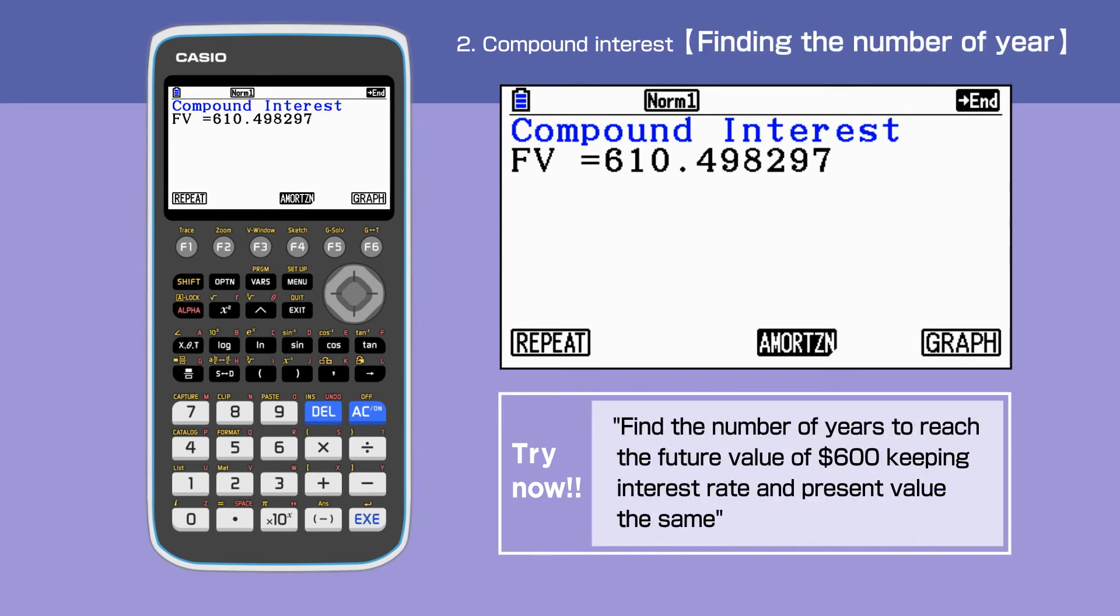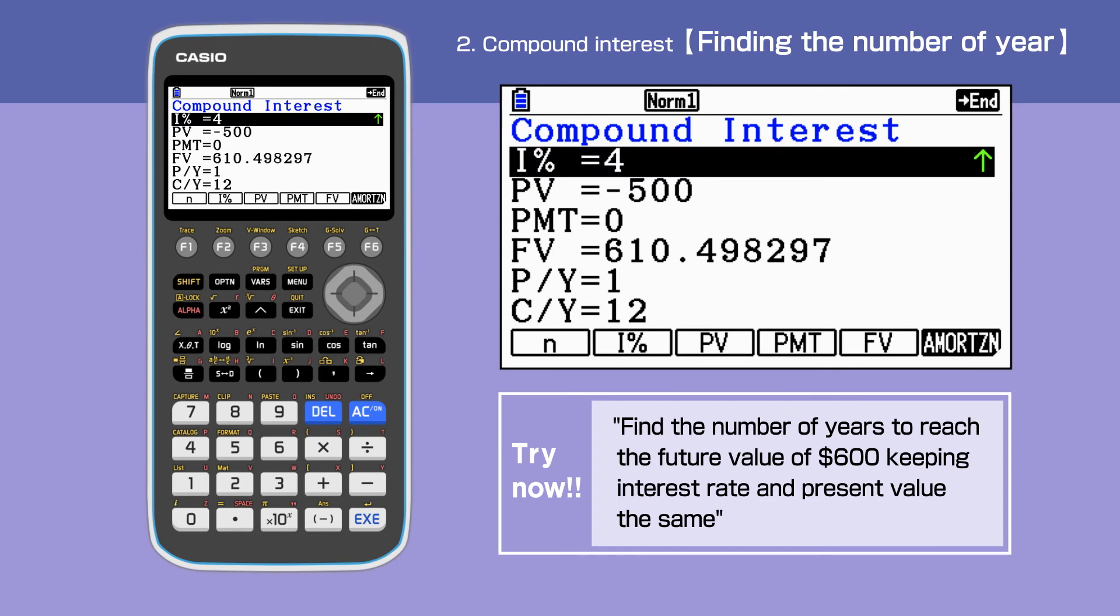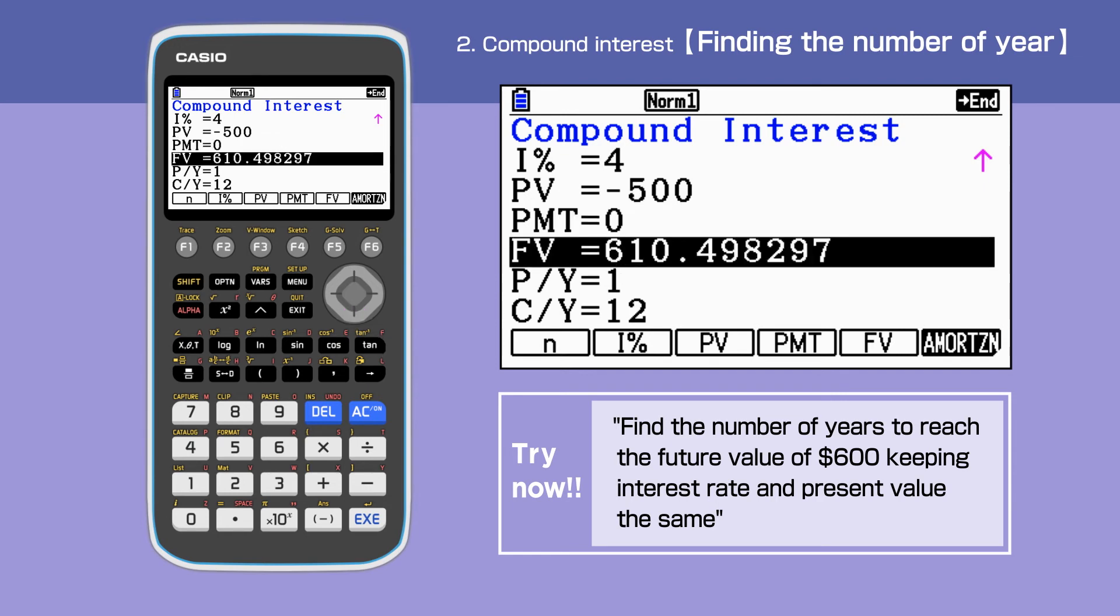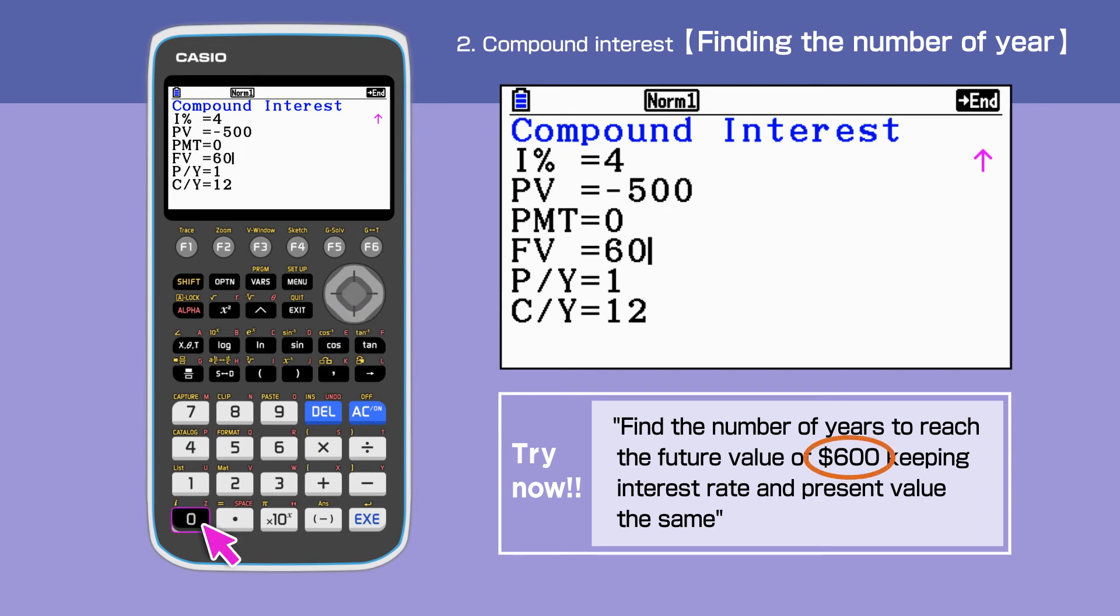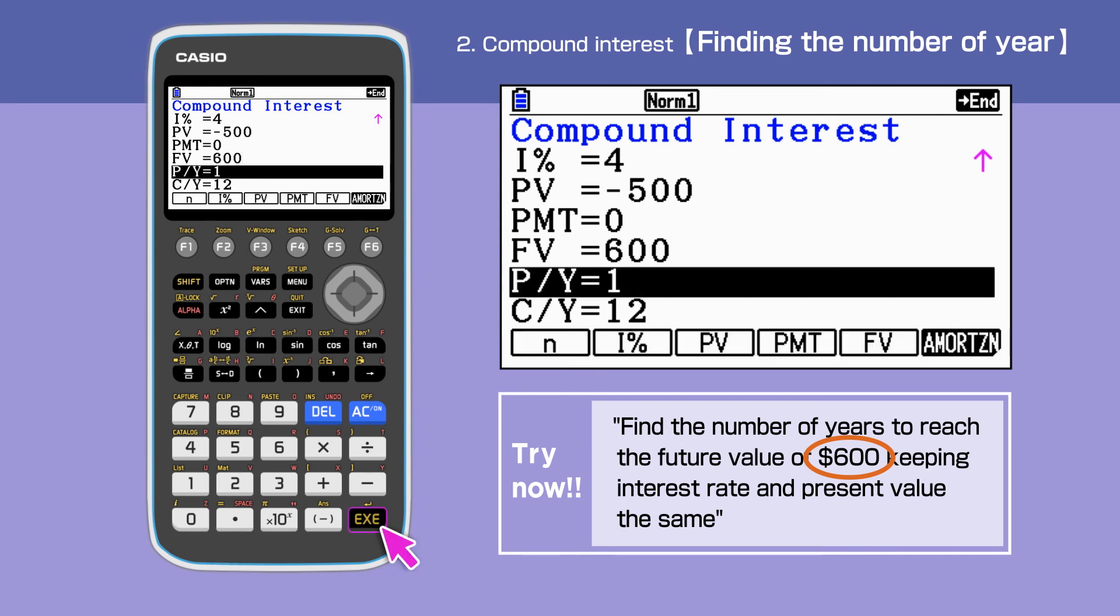Next, we change the question slightly, and this time, we are to find the number of years to reach the future value of $600, keeping the interest rate and present value the same. Press Exit to go back a screen. I, PV, and PMT stay the same. FV is now 600. Leave P/Y and C/Y as they are.